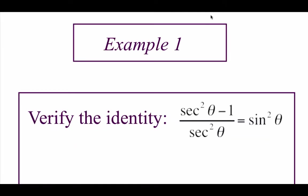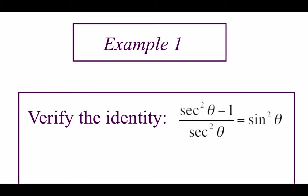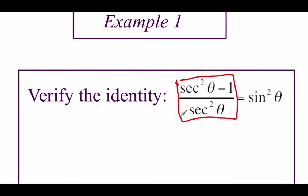Here's our first example. We're going to verify the identity that says secant squared of theta minus one divided by secant squared of theta is equal to sine squared of theta. When we're doing this, we typically want to work with the more complicated side first and try to simplify that down to equal the other side. So I'm focusing on this left-hand side: we've got secant squared of theta minus one over secant squared of theta.